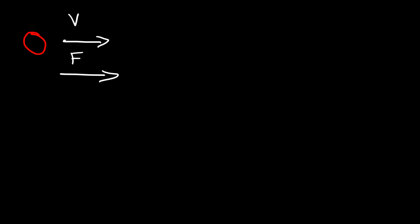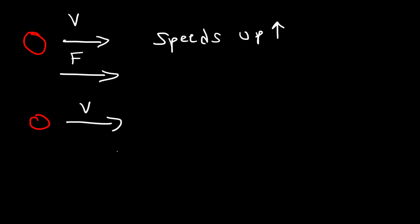If an object is moving towards the right and the net force is also acting towards the right — force and velocity in the same direction — the object speeds up, so it's accelerating. If the object is moving to the right but the force is directed towards the left, whenever the force and velocity vectors are in opposite directions, the object will slow down — it's decelerating.